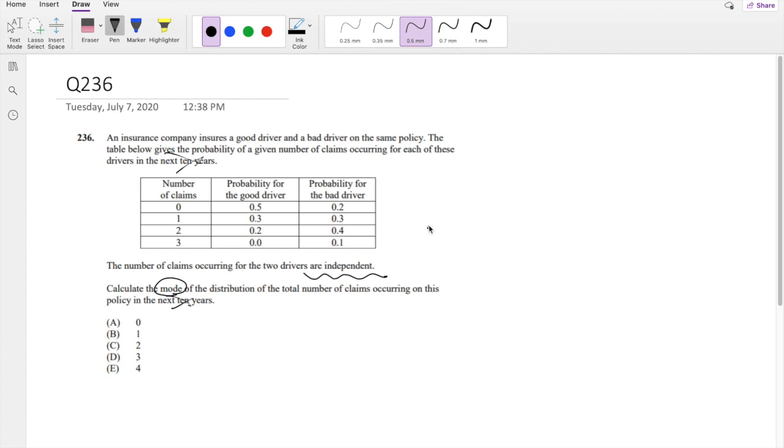When they say find the mode, that means where is it most likely to happen? So what number of claims is the probability the highest? That's basically what it's saying. So keeping that in mind, let's just draw a little table and see what their probabilities are.